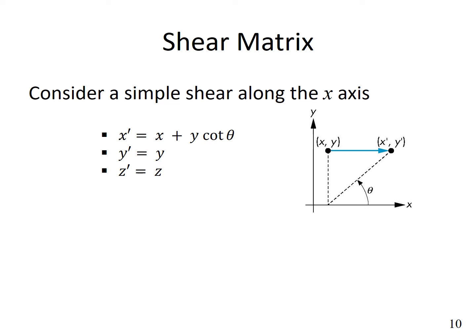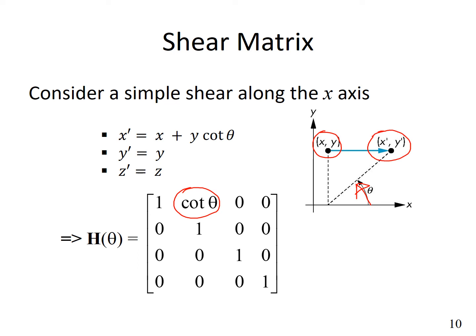The shearing matrix is of this form where we have cotangent theta, where theta is the angle of shear. If points were originally at x, y, they move to x dash, y dash such that the angle between these points is now theta. With the transformation matrix we can represent it like this.